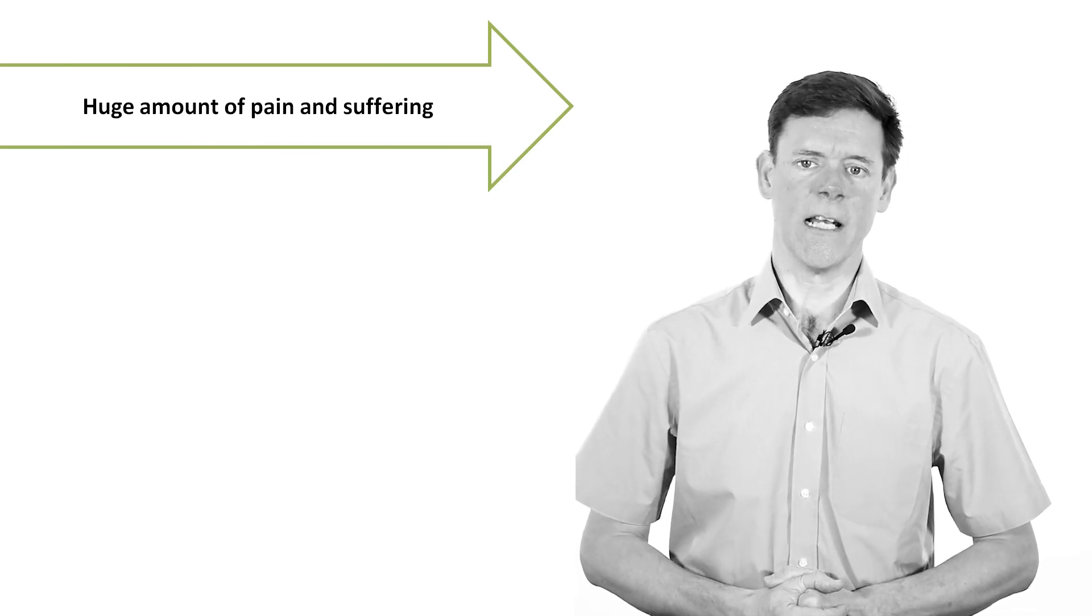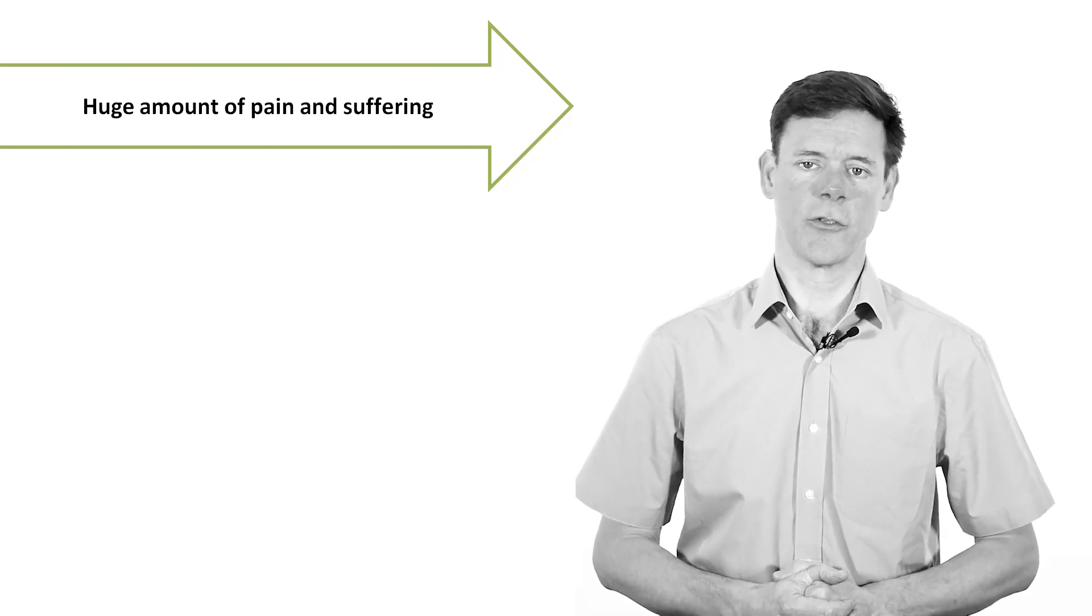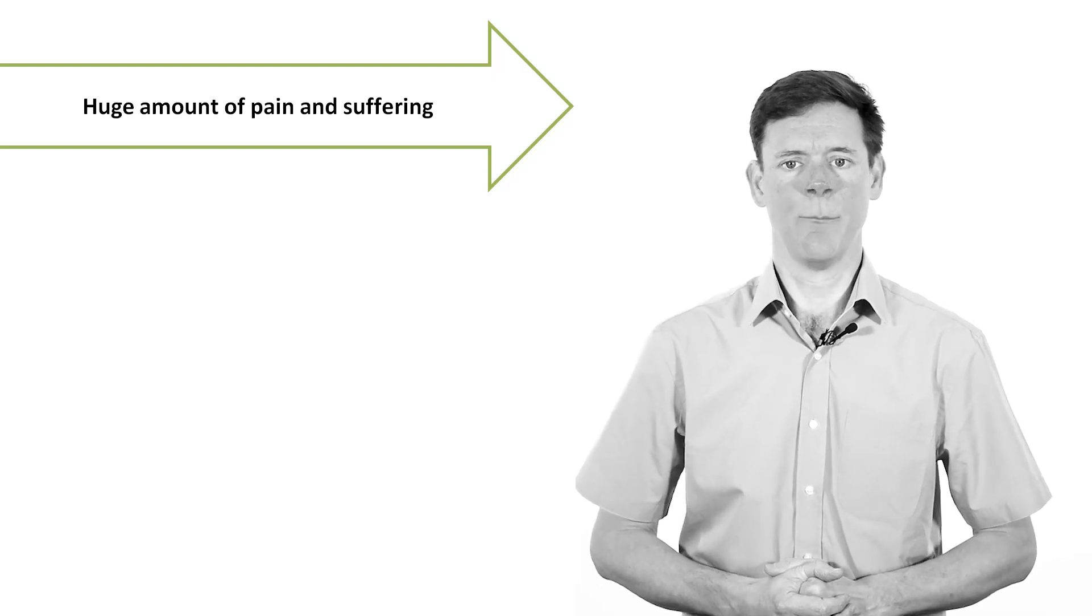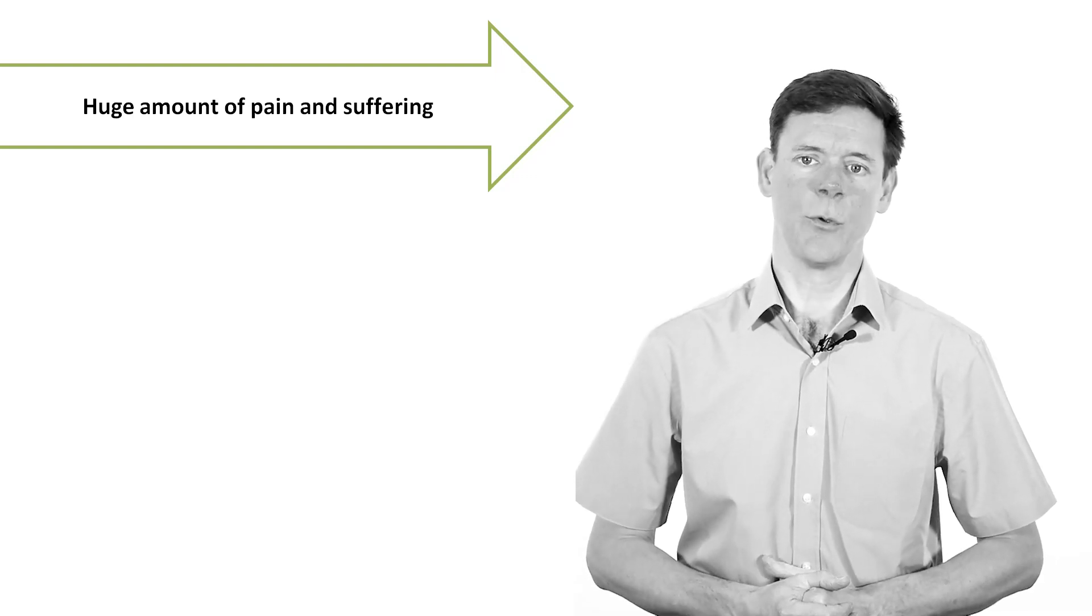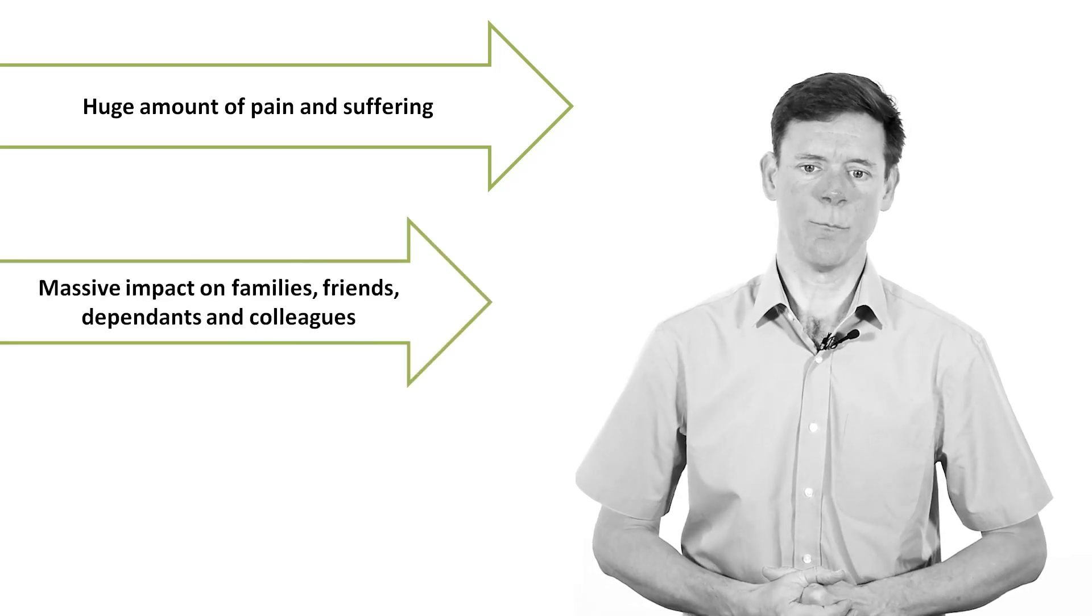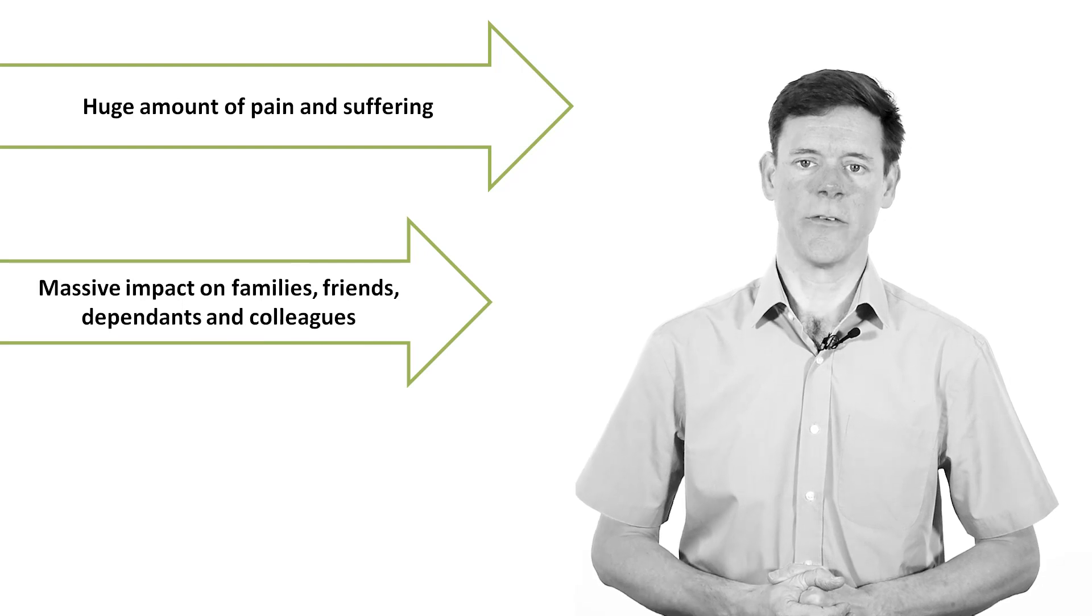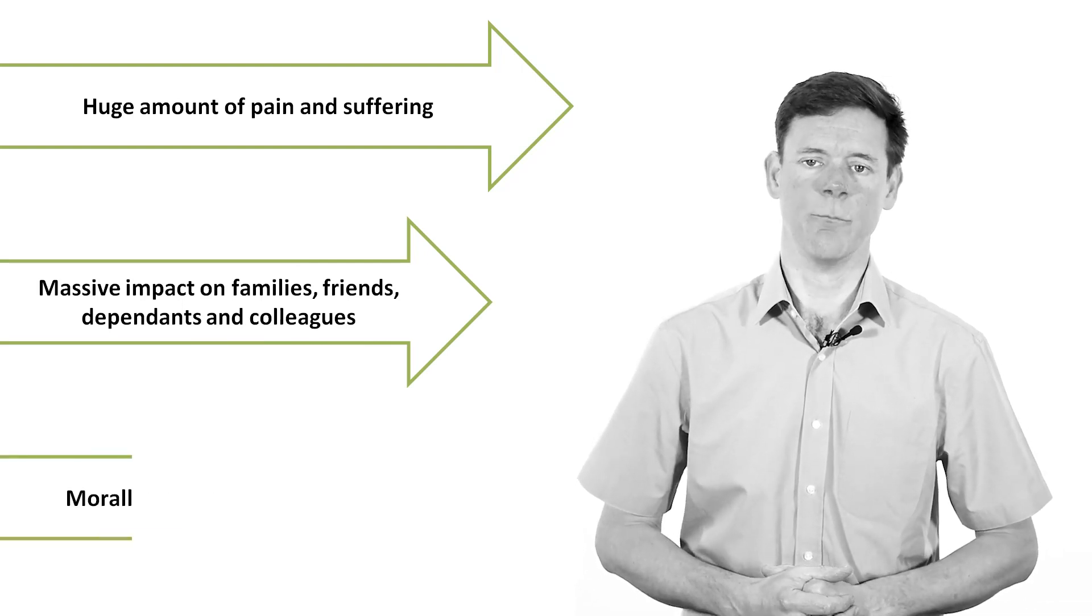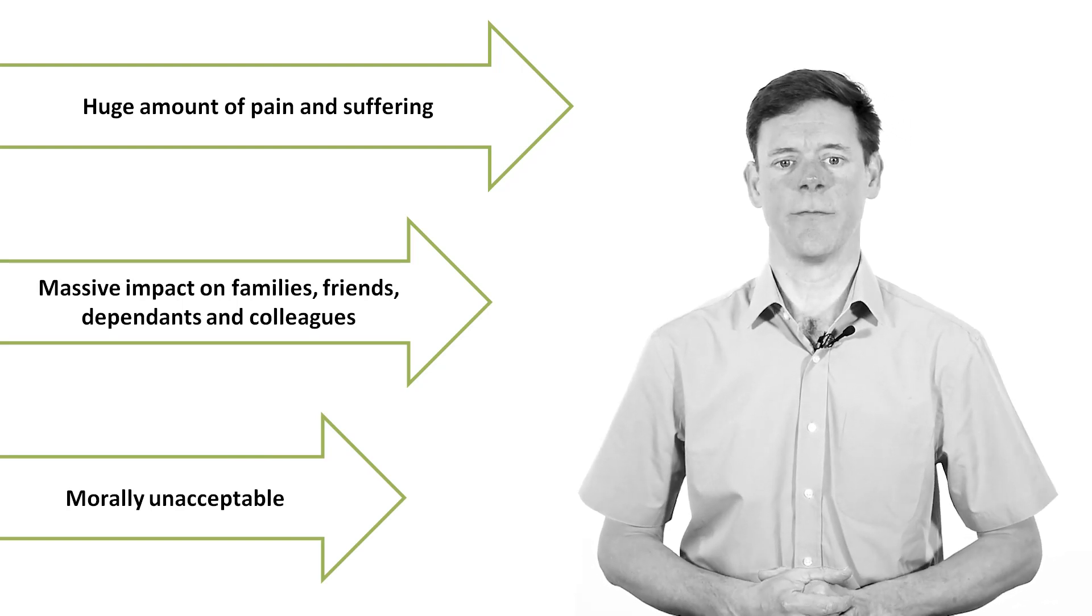The numbers indicate the scale of the problem. What the numbers do not do is tell the individual stories. When health and safety is not managed properly, people get killed and injured in gruesome ways, or they suffer terrible diseases that have a massive impact not only on them, but also on their families, friends, dependents, and colleagues. This suffering is morally unacceptable, and society expects good standards of health and safety.